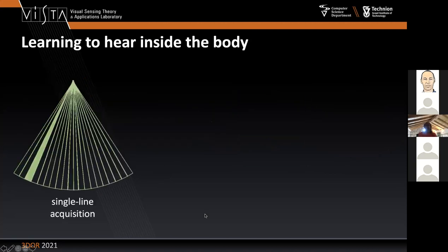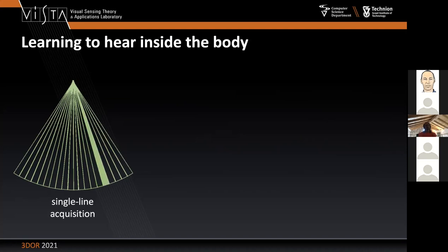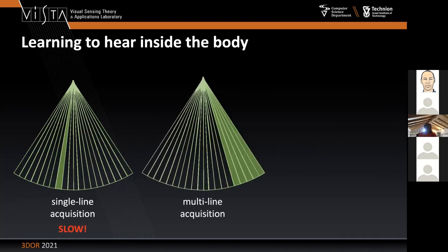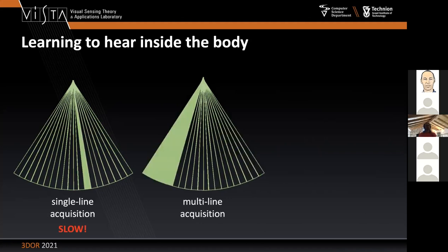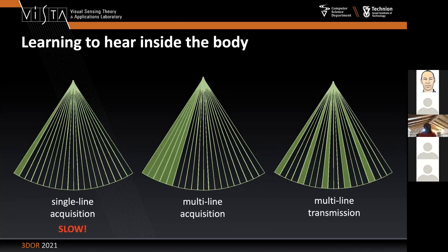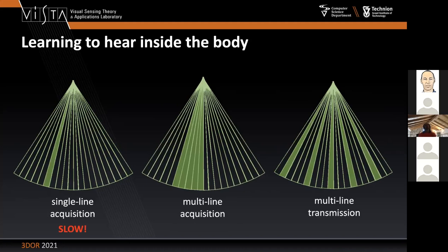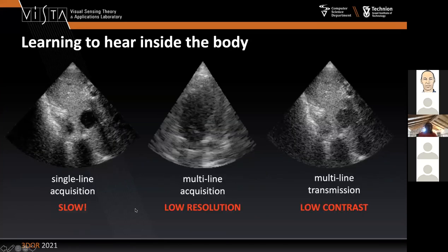The application we tried to deal with is imaging of fast-moving objects, like cardiac imaging. Regular ultrasound works by sweeping the scene with a focused beam, which can be prohibitively slow for fast-moving objects. There are two regular solutions: one is to defocus the beam and sweep faster — multi-line acquisition — or to send multiple beams separated by angular separation to acquire multiple echoes faster. But both suffer from artifacts: multi-line acquisition gives lower resolution, and multi-line transmission produces low contrast and many kinds of artifacts that are difficult to correct.